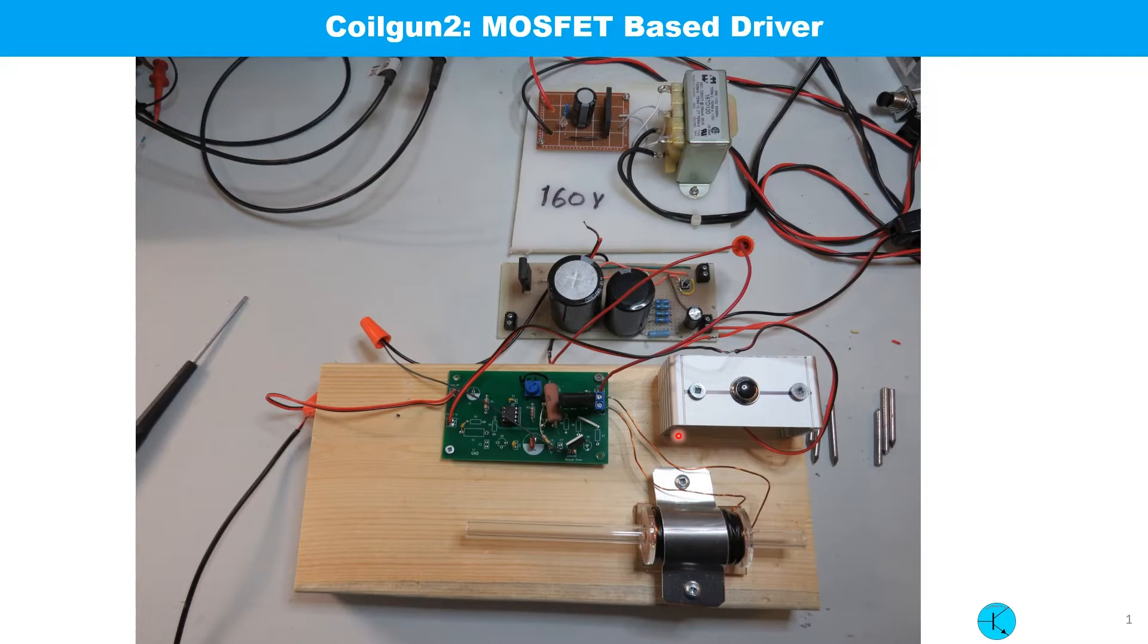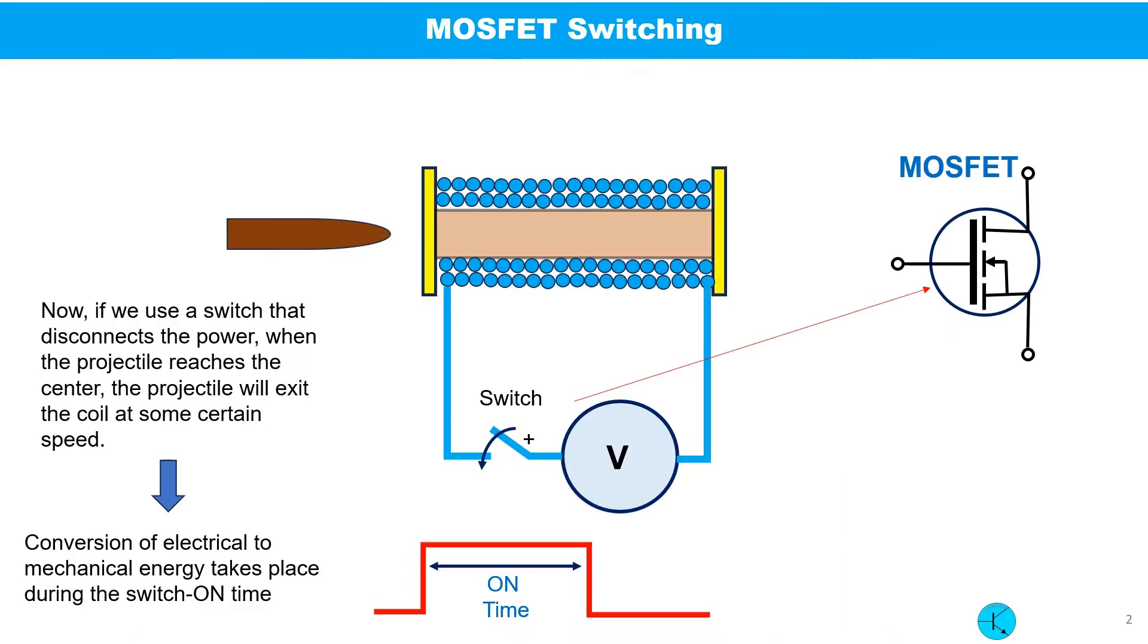This is the photo of the entire coil gun system with the MOSFET switching circuit. As I explained in my last video, when this switch is on, the magnetic field around the coil will attract this ferromagnetic projectile. The attractive force will accelerate the speed of the projectile. When the projectile crosses the center of the coil, the switch should be off.